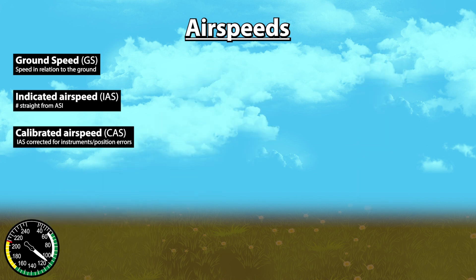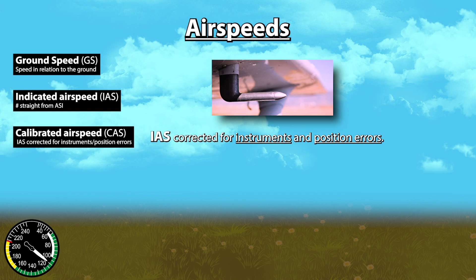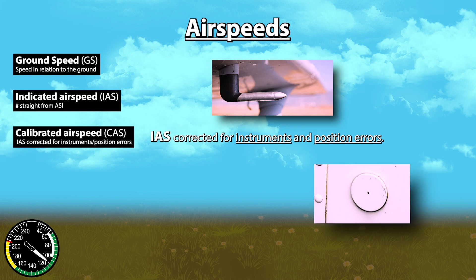Calibrated airspeed is indicated airspeed corrected for instruments and position errors. Those errors can occur because of where your pitot tube and static ports are located in certain flight conditions, like in a climb for example, when the airflow over those is disrupted.